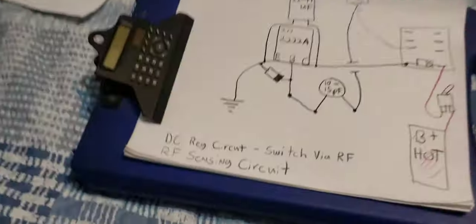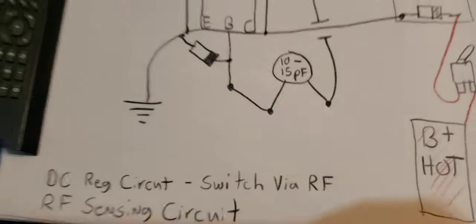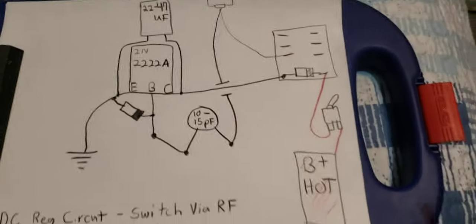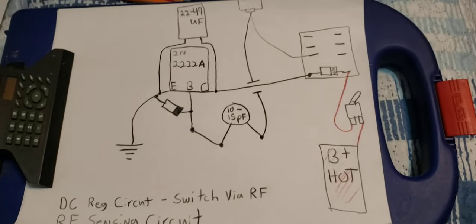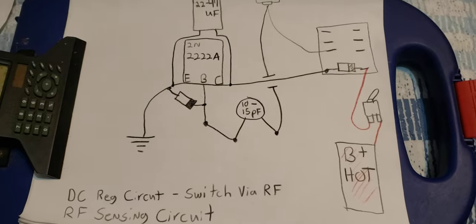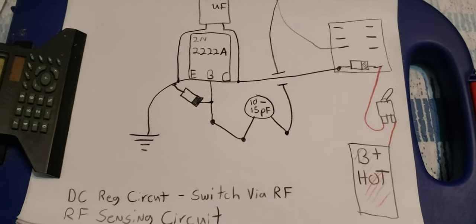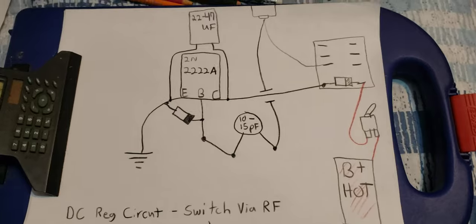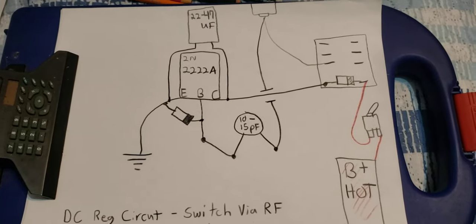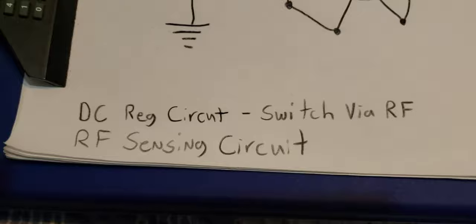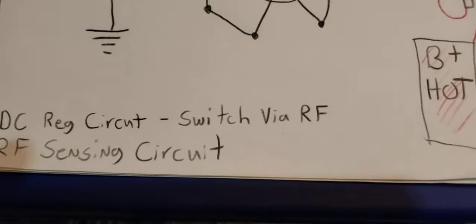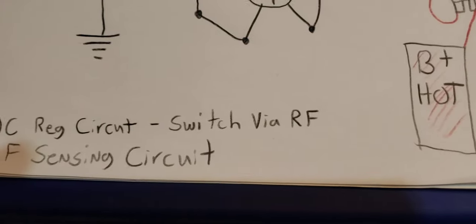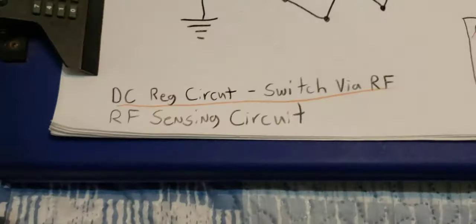But I told them I'd make them a quick diagram just to explain a keying circuit. What we call a keying circuit. Another name for it is an RF sensing circuit. Or what it really is is a DC regulating circuit and a RF switch. A switch via RF. That's what it technically is. I'm going to explain that to you.